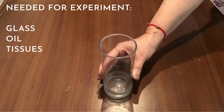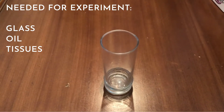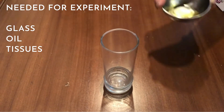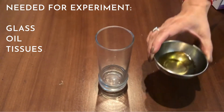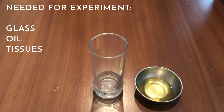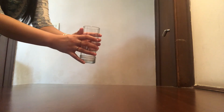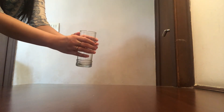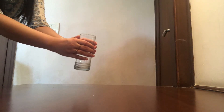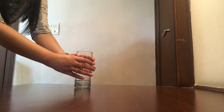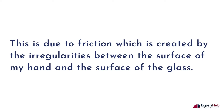For this experiment, I will be using a glass, oil in a small dish, and some tissues used to clean up later. I can firmly hold the glass between my hands. This is due to the friction which is created by the irregularities between the surface of my hand and the surface of the glass.